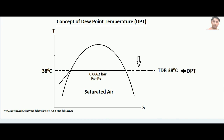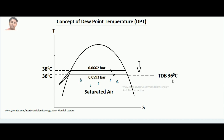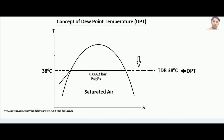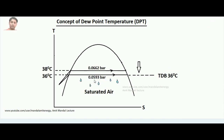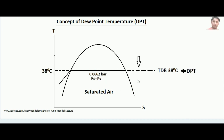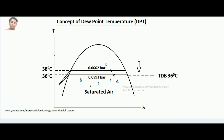If I reduce the air temperature below the dew point temperature, even a minute decrement will cause condensation. Suppose I lower the temperature to 36 degrees centigrade — for 36°C the saturation pressure is 0.0593 bar, but the air had a vapor pressure of 0.0662 bar. Since 0.0593 bar is lower than the existing vapor pressure, some amount of water has to be rejected by air to reduce the vapor pressure to that lower level.